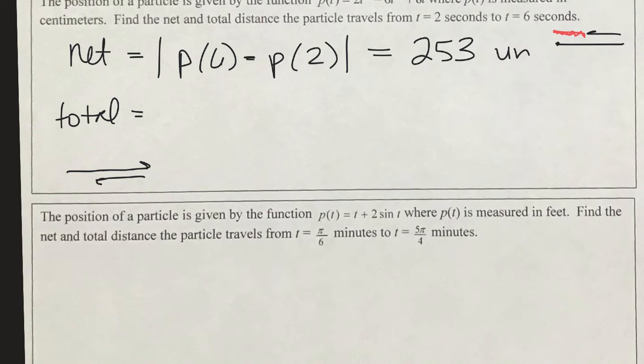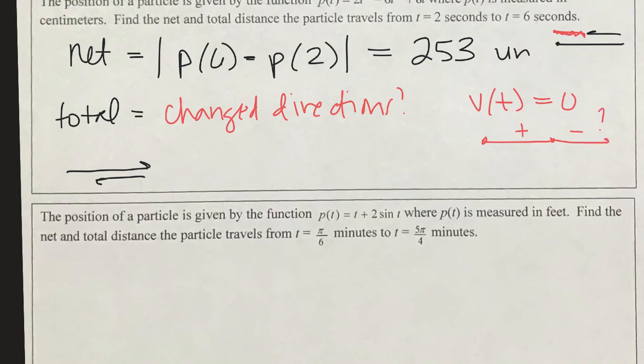So we have to always see has the particle changed directions. That's the question. We know if the particle changes directions if the velocity ever equals zero—then it comes to a stop. So if it comes to a stop and keeps going, then it hasn't changed directions. We have to figure out if the signs change because if the signs change, it changes direction.